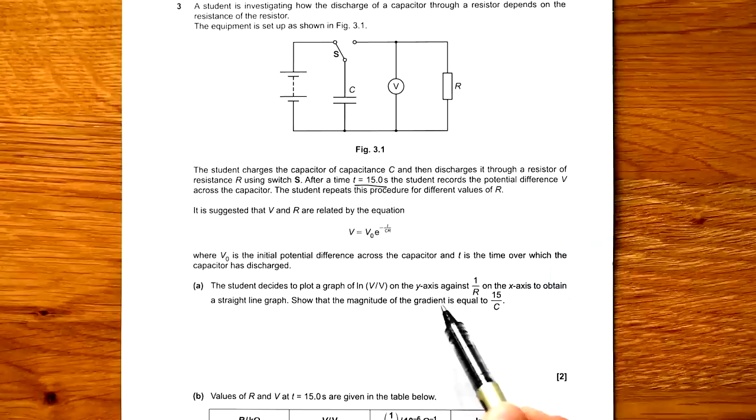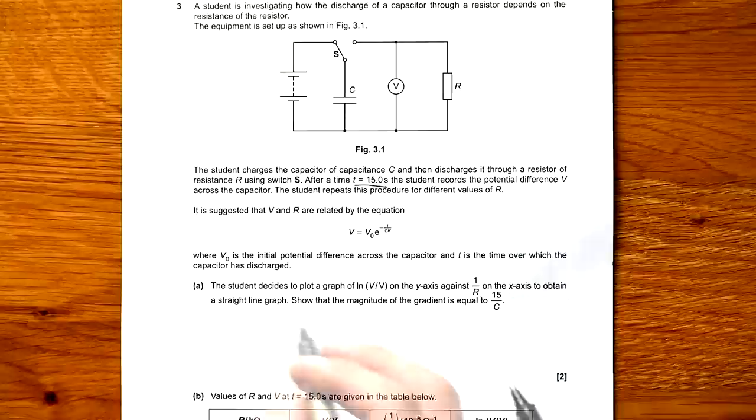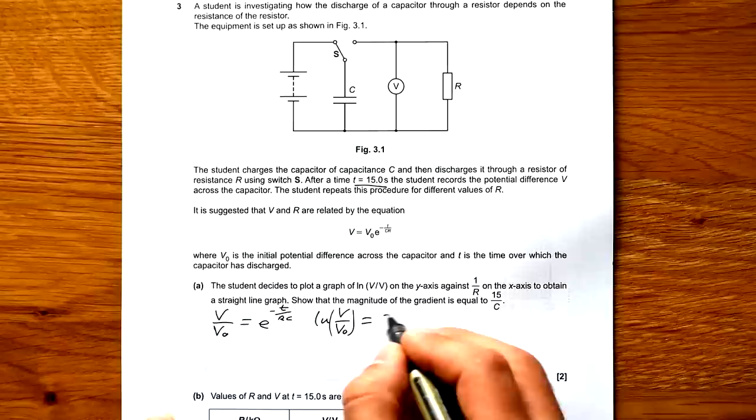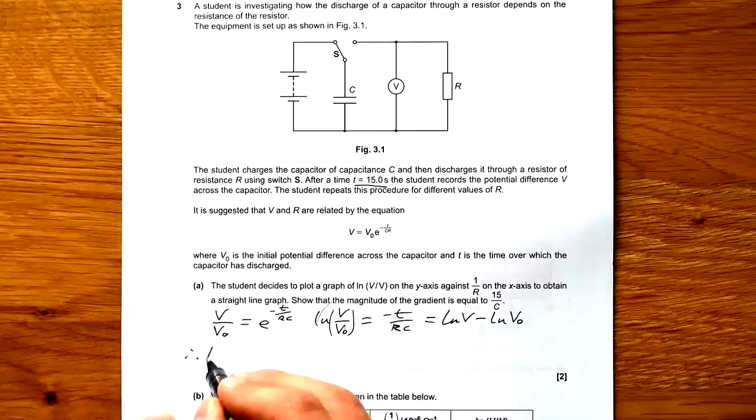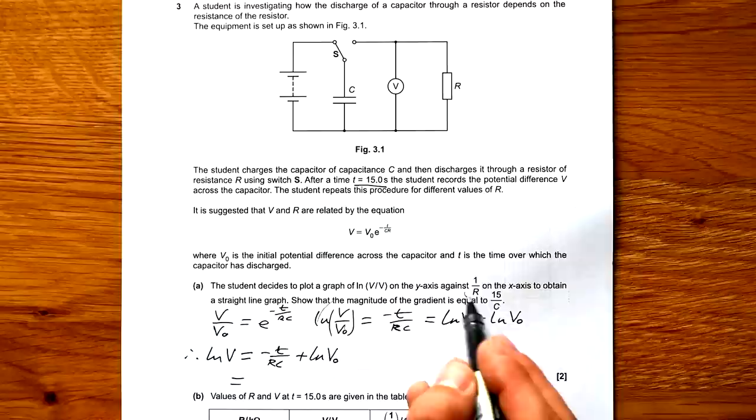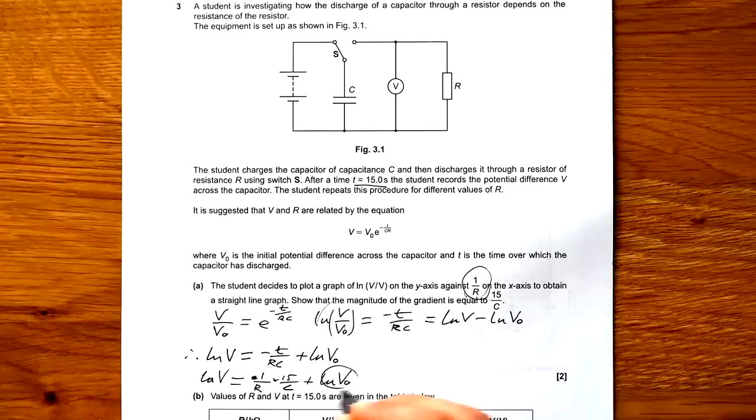Student decides to plot a graph of log V on the y-axis, one over R on the x-axis to obtain a straight line graph. Show that the magnitude of the gradient is equal to 15 over C. So here we go. If we have V over V0 equals this, then that means that log of V over V0 is equal to minus T over RC. But if you know your log identities, you know that the log of a ratio is the log of one take away the log of the other one. Therefore, log of V is equal to minus T over RC plus log of V0. And because they're plotting one over R, that means that we can say one over R times 15 over C plus log of V0.